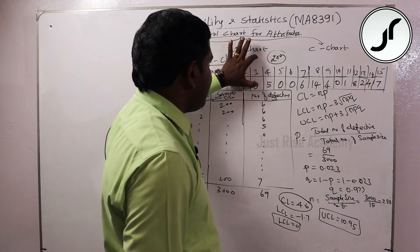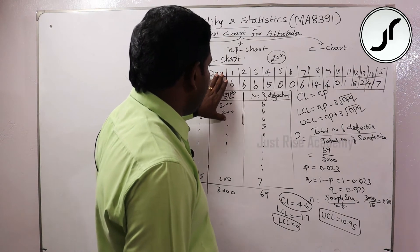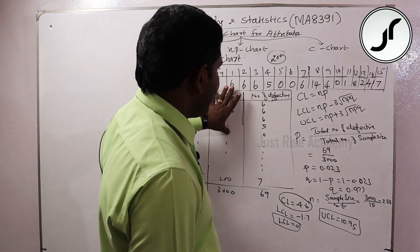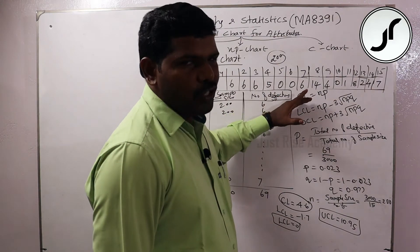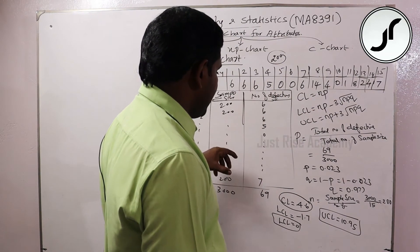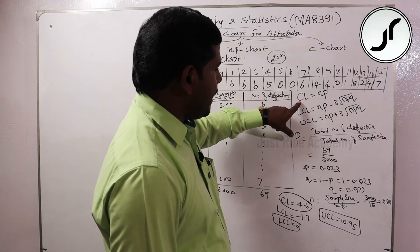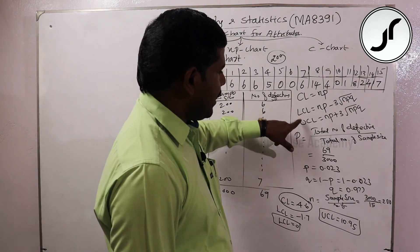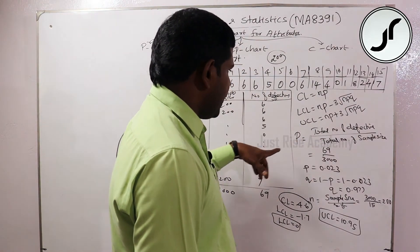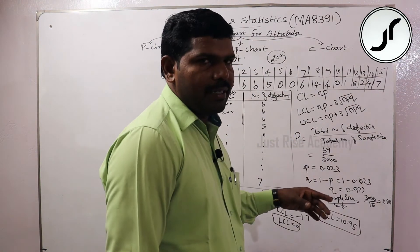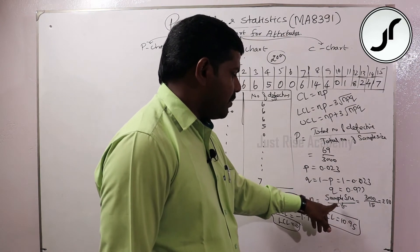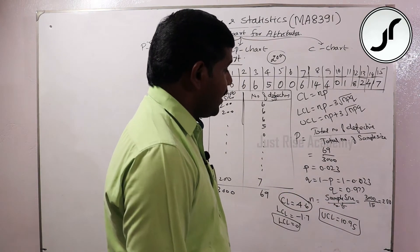If you want to make the NP chart: sample size and number of defectives are needed — proportion is not required (proportion is required for the P chart). So CL, LCL, and UCL are calculated. p = total number of defectives divided by total sample size; q = 1 minus p; n = sample size divided by total number of samples.